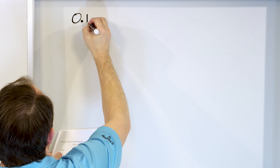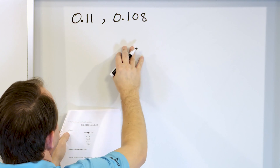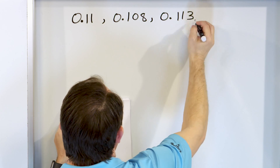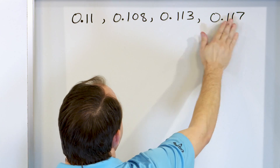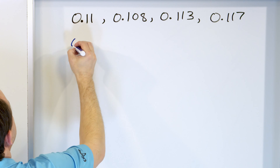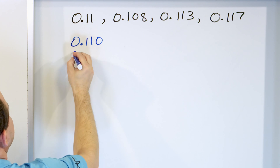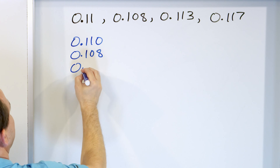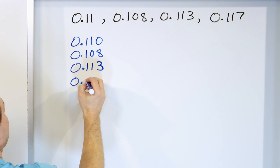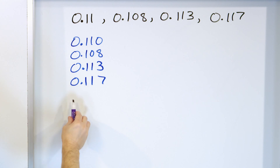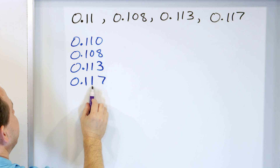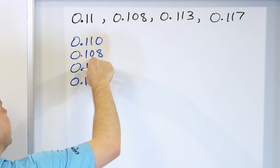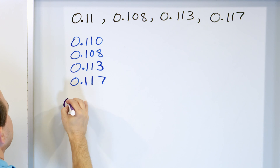Let's take a look at problem number four: 0.11, 0.108, 0.113, and 0.117. We have three digits, three digits, three digits, and two digits. So we stack them up, padding 0.11 with a zero to get 0.110, then 0.108, 0.113, and 0.117. We compare the whole numbers — all zero, tied. We look at the tenths — all 1, tied. We look at the hundredths: 1, 0, 1, 1. The smallest is the zero, so 0.108 is the smallest number.